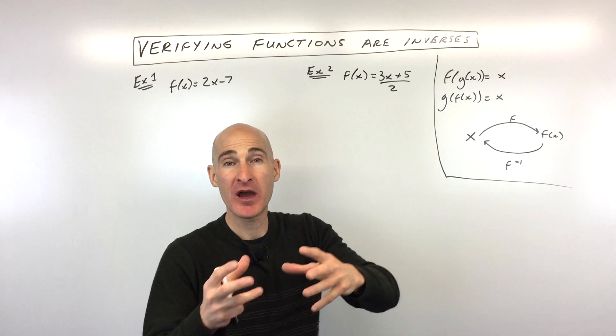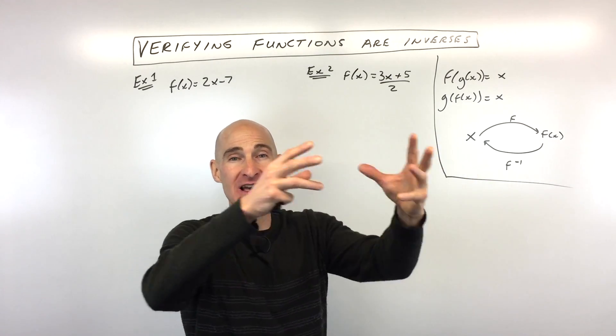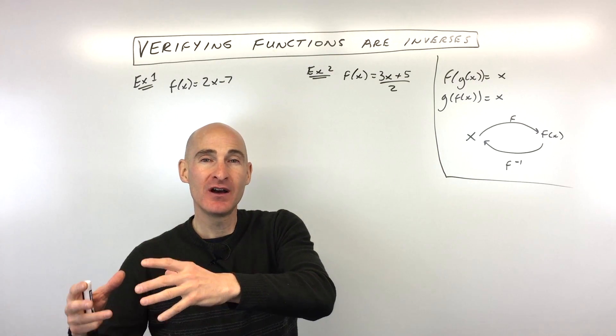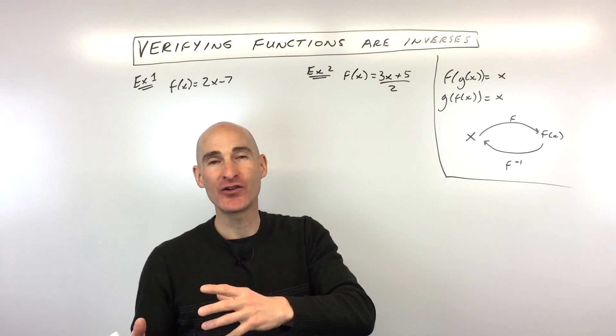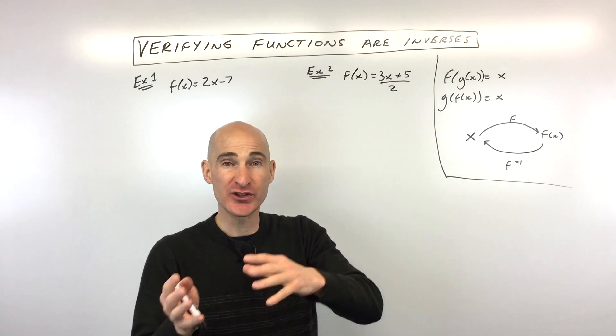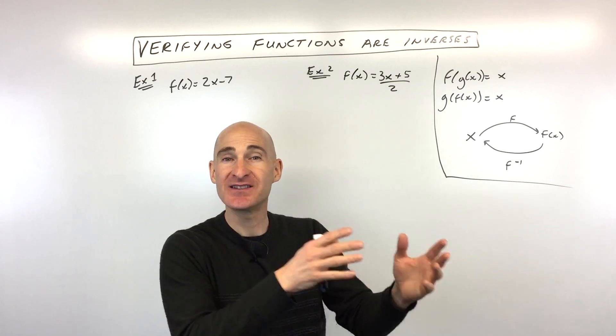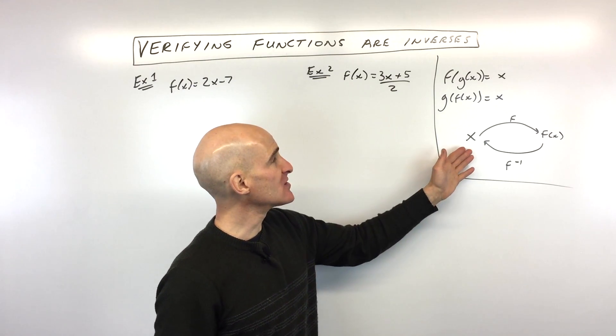It's kind of like if you take a number and multiply it by seven, then divide it by seven, you get back that original number because multiplying and dividing are inverse functions. Or if you square something, square root, or add, subtract—those are all inverses of each other.